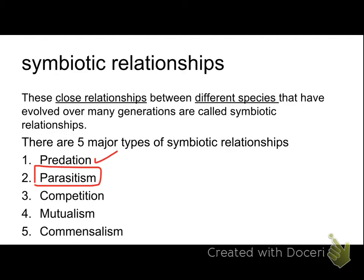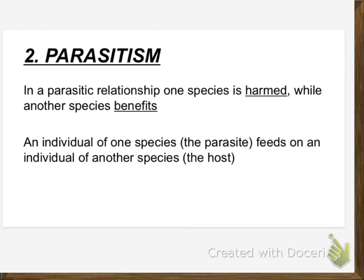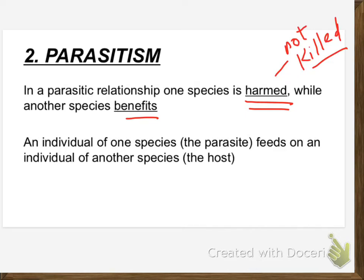As a relationship between populations of different species in a community, you have a relationship with your parasites. In a parasitic relationship, one species is definitely harmed in some way — harmed, but not killed. The other species benefits. An individual of one species, the parasite, feeds on an individual of another species, which is the host.